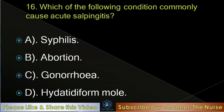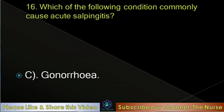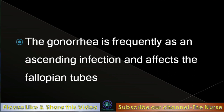Next question: Which of the following conditions commonly causes acute salpingitis? Options: Syphilis, abortion, gonorrhea, hydatidiform mole. Correct answer: Gonorrhea. Gonorrhea frequently causes an ascending infection and affects the fallopian tubes.